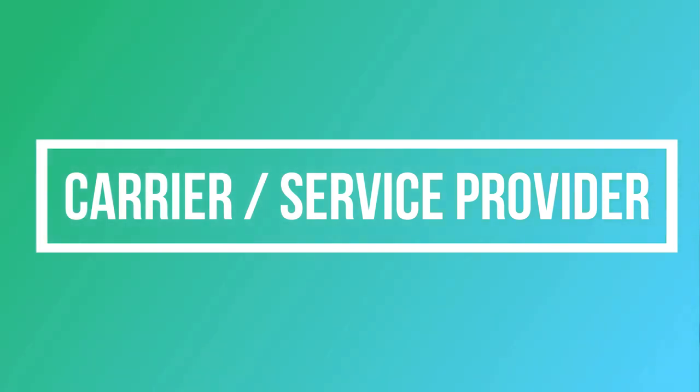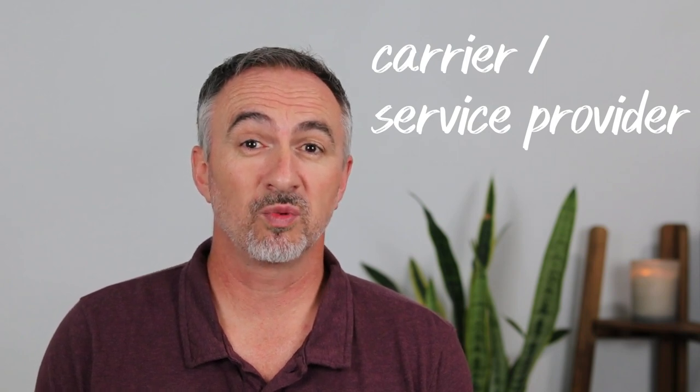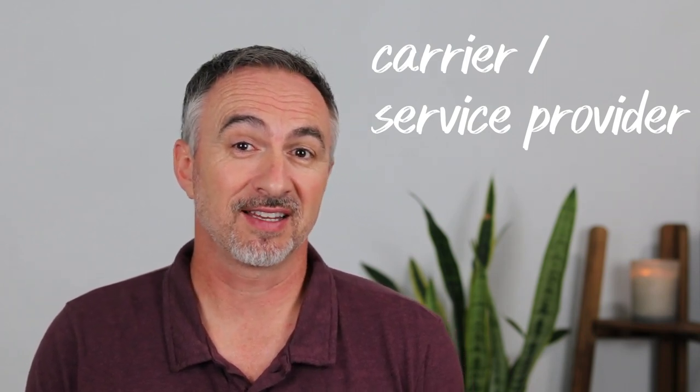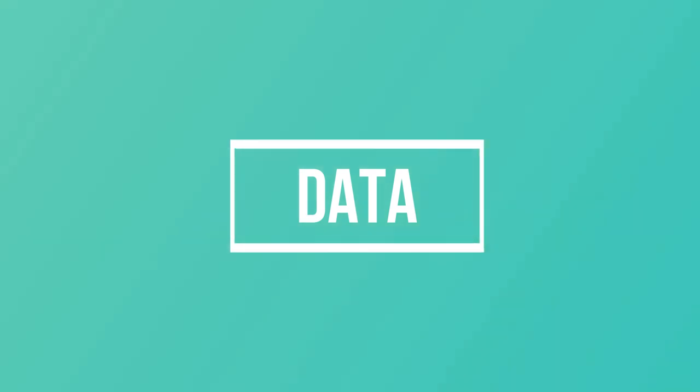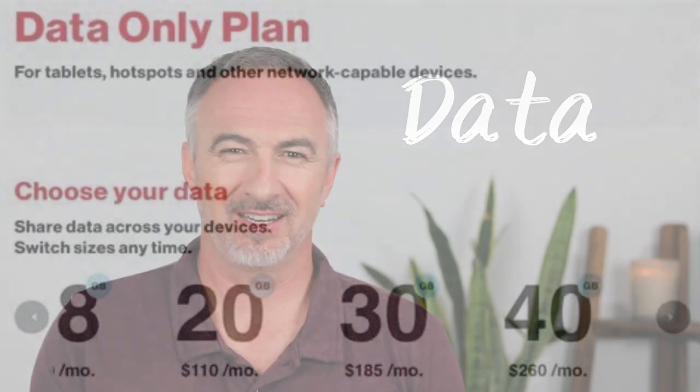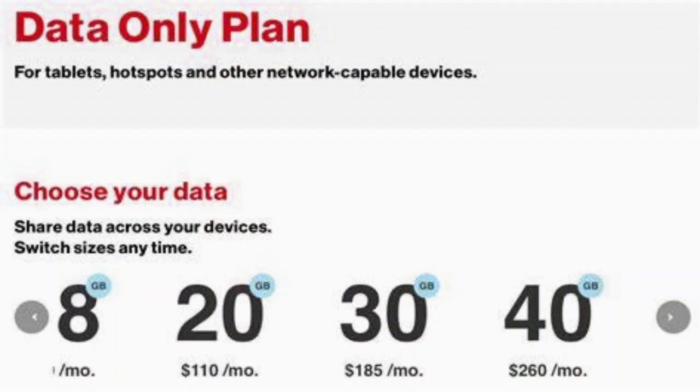Carrier or service provider — this is the name for the company that's providing you with the telephone and the internet service. Data — this is connected to the internet and how much you use the internet, so how much you watch videos, how much you download things onto your cell phone, emails. Some companies will charge you specifically for how much data — how much internet usage you have — and it's normally measured in gigabytes.